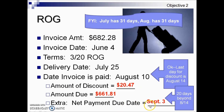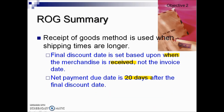In summary for receipt of goods: it's used when shipping times are longer. The final discount date is set based upon when the merchandise is received, not the invoice date. Similar to what we've seen in EOM, the net payment due date is 20 days after the final discount date, should they not give you a net date in the terms.